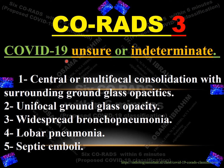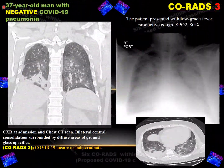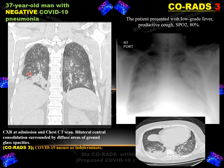CO-RADS 3 means COVID-19 is unsure or indeterminate. If there are central or multifocal consolidations with surrounding ground glass opacity, unifocal ground glass opacity, widespread bronchopneumonia, lobar pneumonia, or septic emboli, these are considered CO-RADS 3 — unsure or indeterminate for COVID-19 diagnosis. A 37-year-old male patient with multiple areas of consolidation surrounded by ground glass opacity is classified as CO-RADS 3, and was both positive and negative for COVID-19 in laboratory testing.